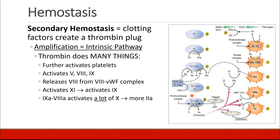The next step is amplification, and this involves the intrinsic pathway. Tissue factor 7, 10, and 5 have all come together to create thrombin. Thrombin has many roles: it can further activate platelets, it can activate factors 5a, 8, and 9, it can release factor 8 from von Willebrand's factor, and it can activate factor 11, which activates factor 9. The factor 9 and factor 8 complex activates a lot more factor 10, which activates even more factor 2. So we see this amplification process going on in many different dimensions.